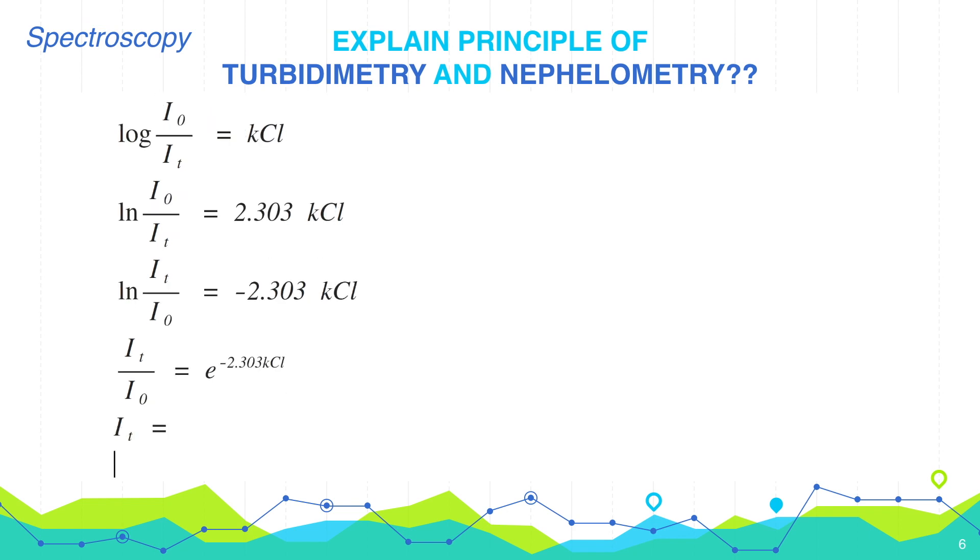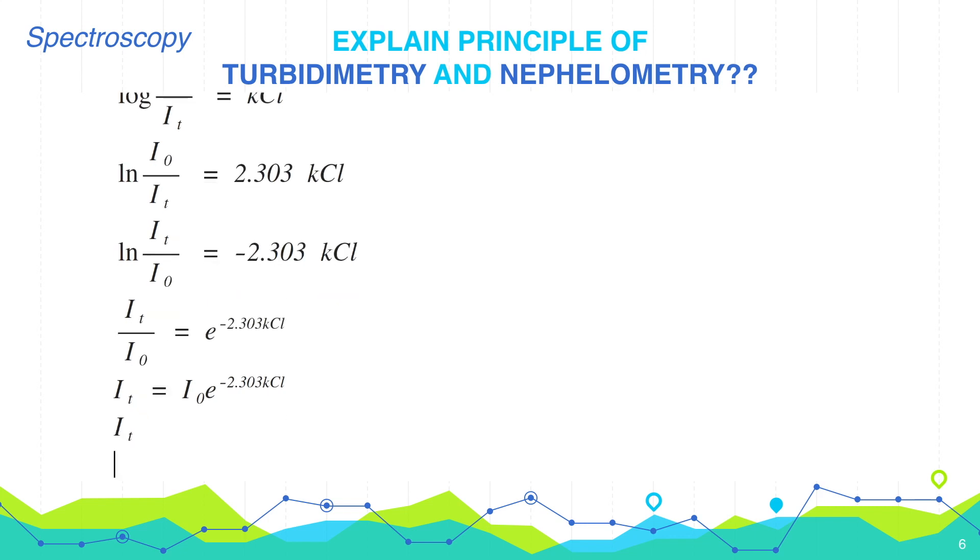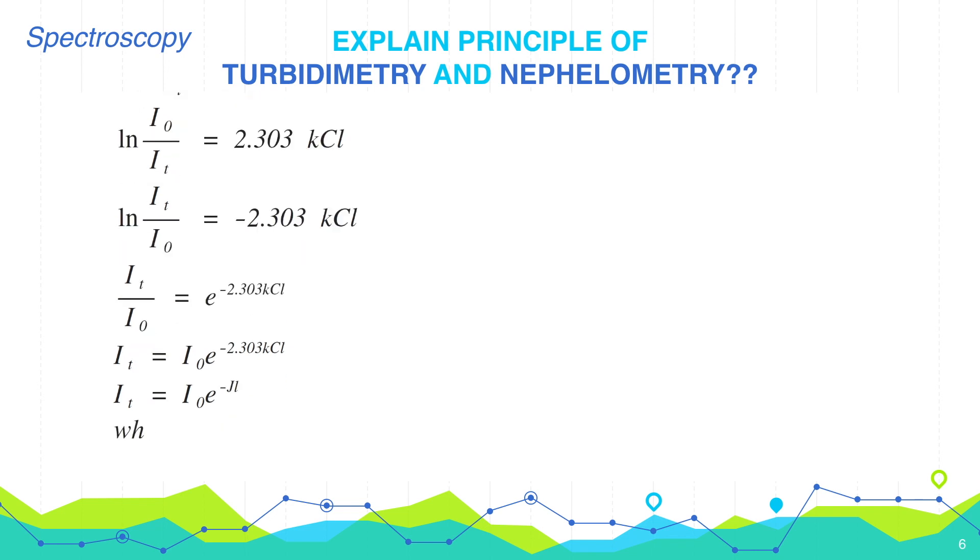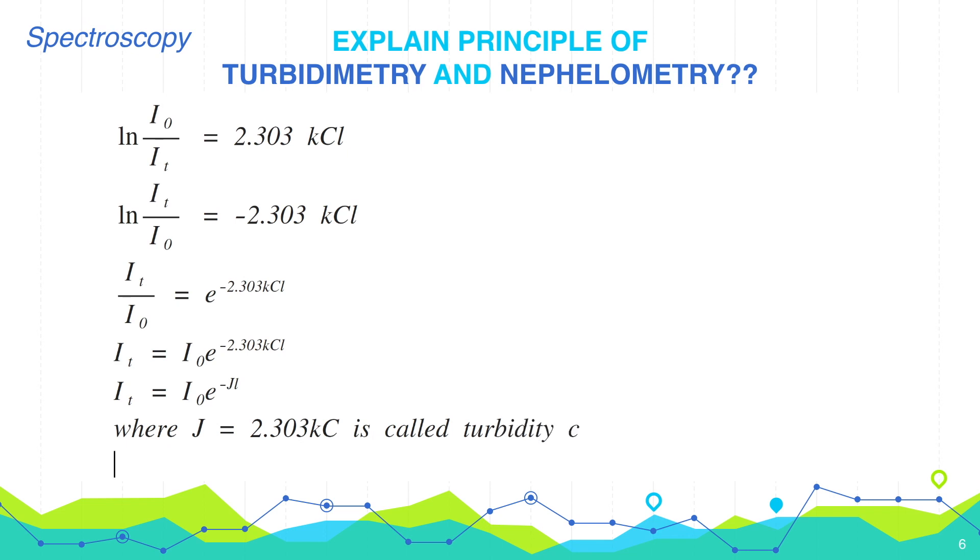Or, it is equals to i0 e raised to power minus 2.303 k c l. Or, we can write, it is equals to i0 e to power minus j l. Where j is equals to 2.303 k c is called turbidity coefficient.